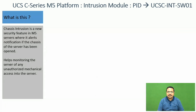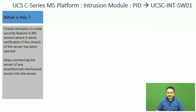What is this module? Chassis Intrusion is a new security feature introduced in AM5 servers where it alerts a notification if the chassis is open. It helps in monitoring the server for any unauthorized mechanical access.